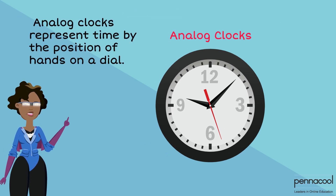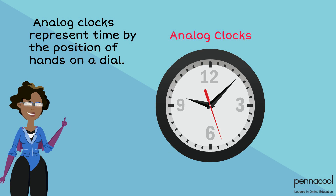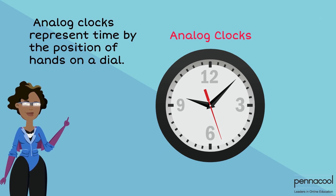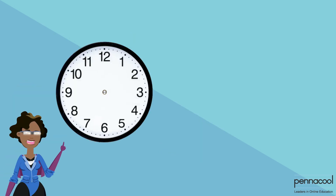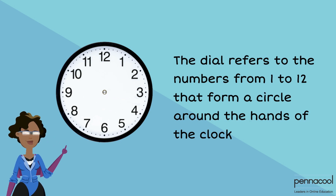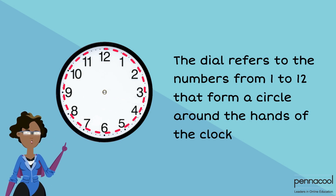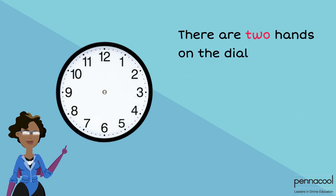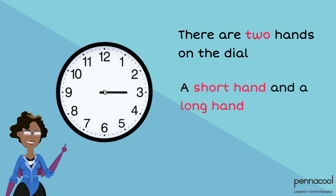Analog clocks represent time by the position of hands on a dial. The dial refers to the numbers from 1 to 12 that form a circle around the hands of the clock. There are two hands on the dial: a short hand and a long hand.